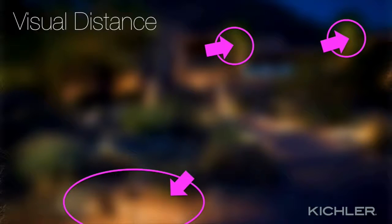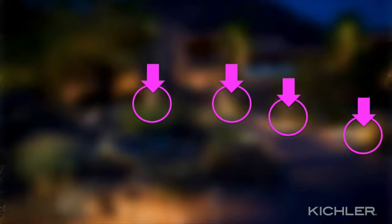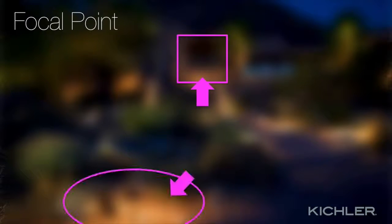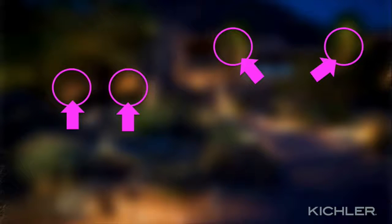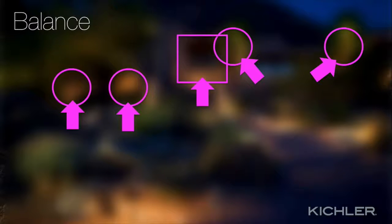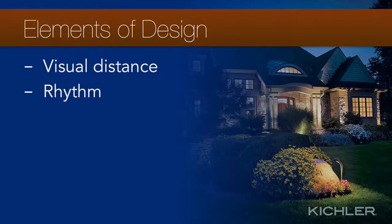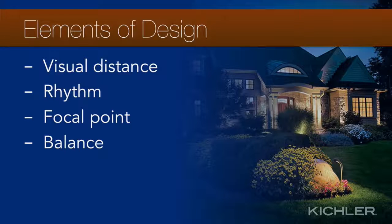This image has the details blurred out so you can see what's really at issue in a lighting design: the play of light areas and dark areas. We see a pool of light at the front defining the frame, pools of light marching through the middle ground, and a focal point in the center framed by the rest of the lights. Visual distance, rhythm, focal point, and balance — these are the key concepts that will make your design coherent, professional, and visually striking.